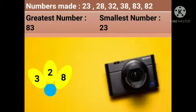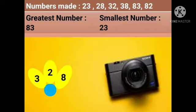Let's move to the second one. Here there are three petals given with digits 3, 2, and 8. From this, the numbers we can make are: 23, 28, 32, 38, 83, and 82. From all these numbers, 83 is the greatest number and 23 is the smallest number.